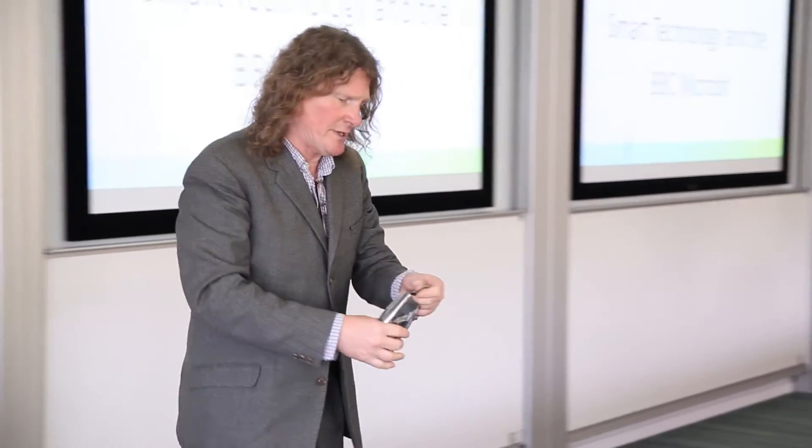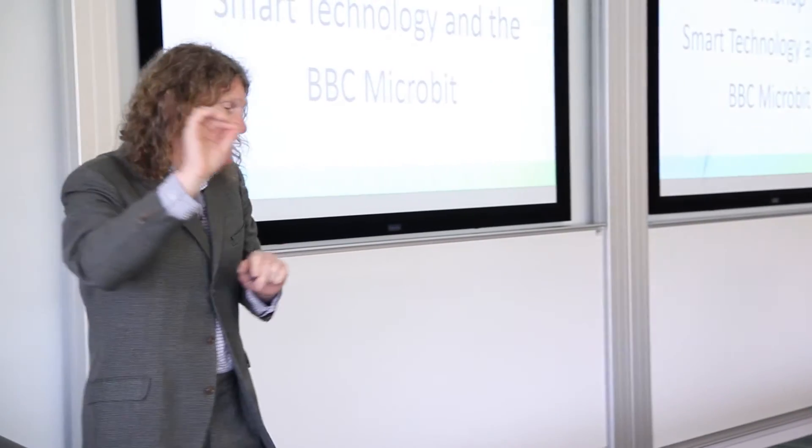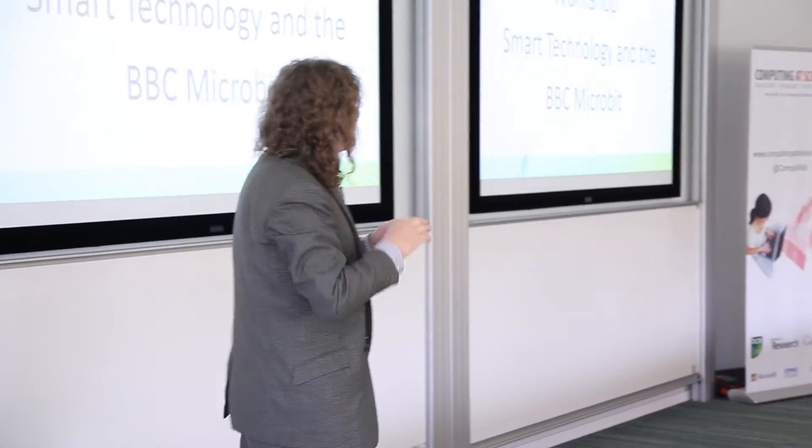The BBC micro:bit is a small programmable device that was announced by our Director General in March of this year. It's going to be a gift to a million kids in the autumn. Its idea is to get kids programming again — to get them to think about how devices work, how you program something, how you program a small device to do the things that you want it to do. This is the prototype. We see it very much as a first step in writing programs for devices. Kids who are 10, 11, 12, 13 now need to be prepared for this revolution — they will be the creators of that revolution, not the consumers of it.